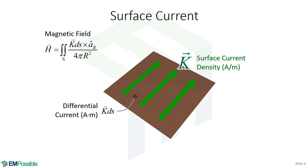Let's move on now to a surface current. On a surface, we'll have a little differential surface area dS. We're describing the surface current density as a vector capital K. It's a vector because now that we have a surface, this current could go lower left to upper right, lower right to upper left, or any direction. So the surface current density has to be a vector quantity, and it has units of amps per meter.